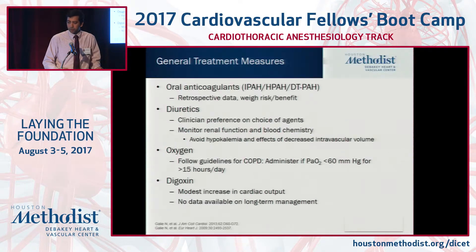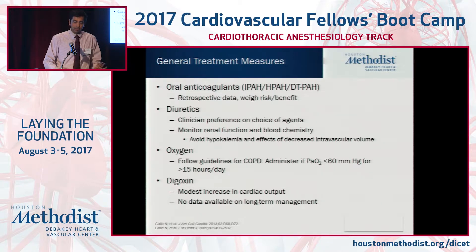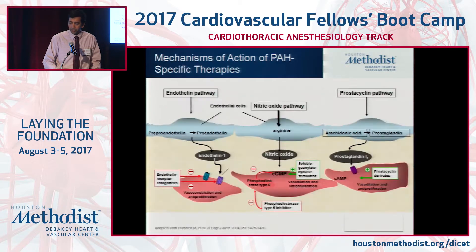We'll quickly go over some of the PH therapies. These are some of the general treatment measures to address the right heart — diuretics to decrease preload, digoxin to help with contractility, and oral anticoagulants. The data here is a little controversial, mostly recommended in patients with idiopathic pulmonary hypertension.